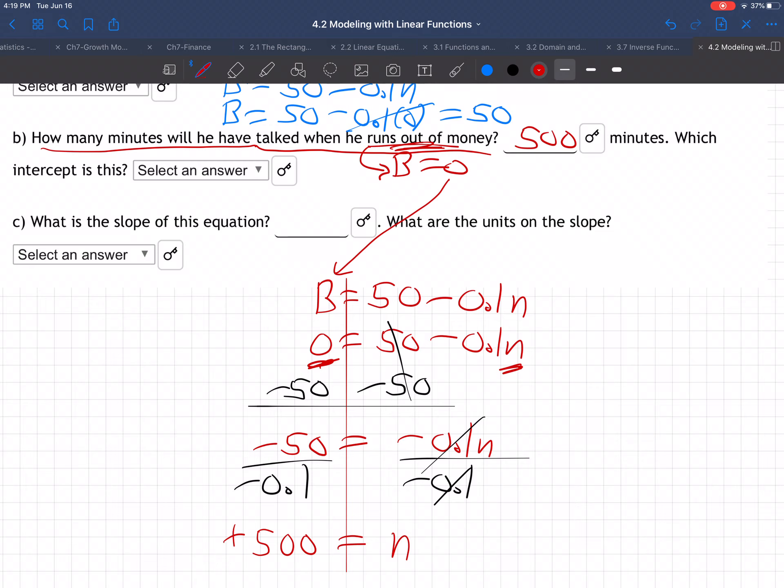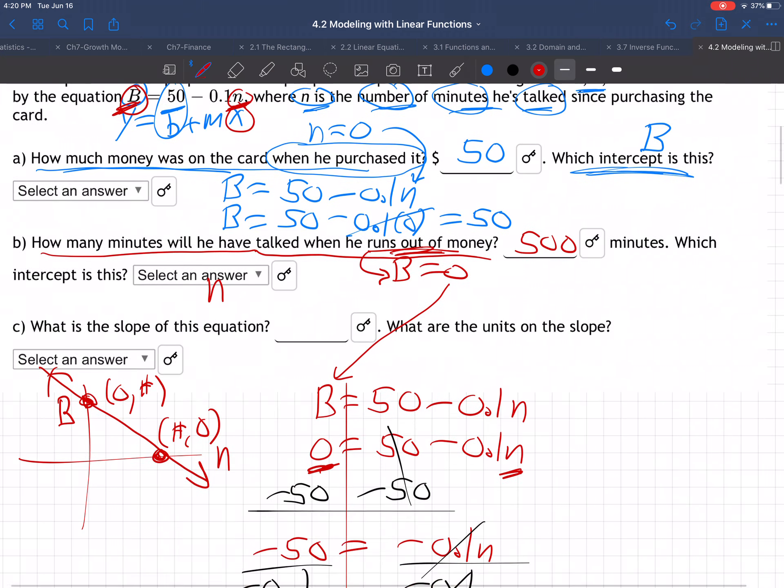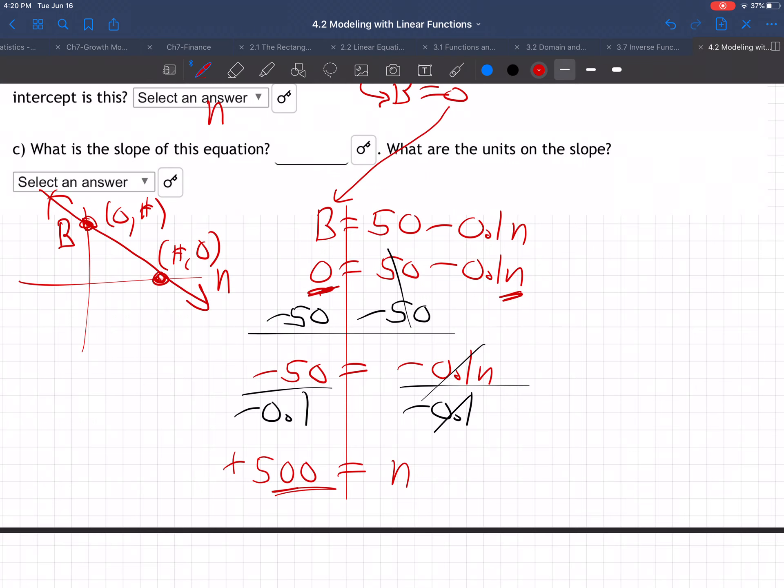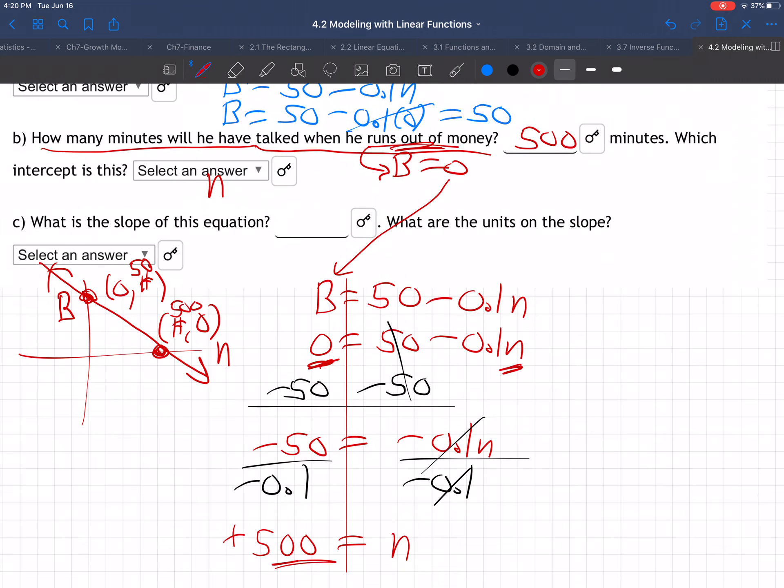Which intercept is this? This is the N-intercept. Remember, intercepts always have one coordinate zero. On a graph, B is the vertical axis and N is the horizontal axis. We just found (500, 0) and previously found (0, 50). At 500 minutes, the balance is zero.